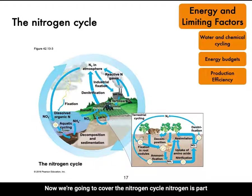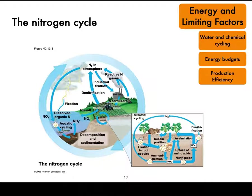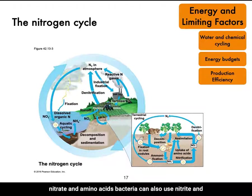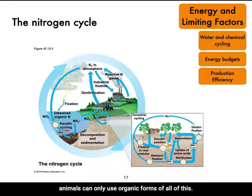Now we're going to cover the nitrogen cycle. Nitrogen is part of amino acids, proteins, and nucleic acids, and it often limits primary productivity. Plants can use ammonium, nitrate, and amino acids. Bacteria can also use nitrite, and animals can only use organic forms of nitrogen.